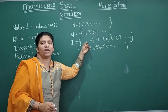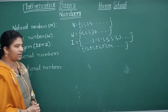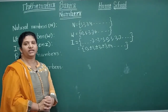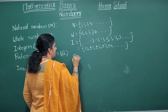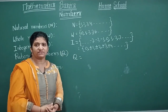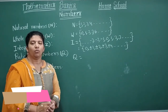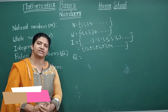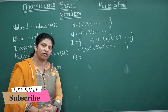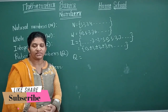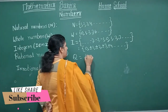The next type is rational numbers, represented by the letter Q. Rational numbers are all numbers which can be expressed in the form P by Q — that is, as a fraction — with one condition: the denominator Q can never be equal to zero.